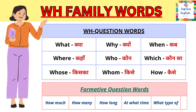In English, there are 9 WH words: what, why, when, where, who, which, whose, whom. In all these words, there is only one exception — how. The rest of the words start with WH, but 'how' is the exception.